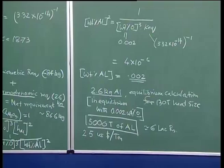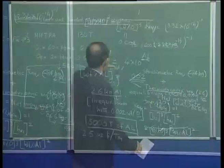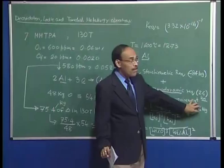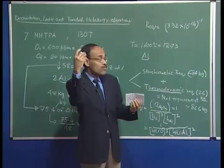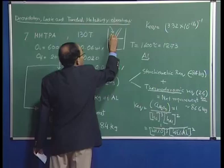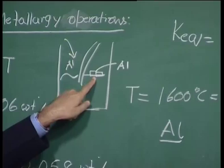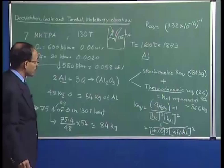It is important to note that this assumes all 86.6 kg of aluminum added per heat is utilized for stoichiometric and thermodynamic requirements with no losses. In reality, more aluminum must be added because some reacts with the atmosphere. Aluminum added through a chute floats to the free surface due to its lower density, and part of it reacts with the atmosphere as it melts and dissolves into the molten steel bath.